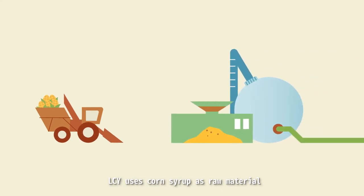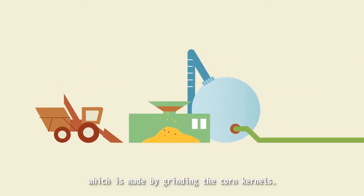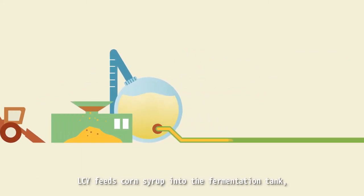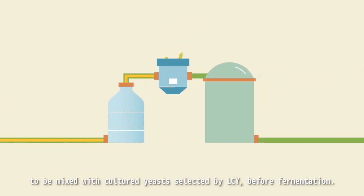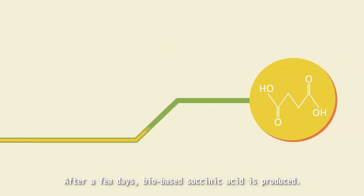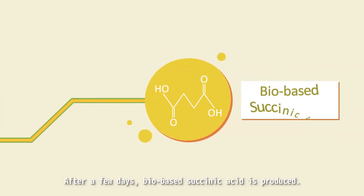LCY uses corn syrup as raw material, which is made by grinding the corn kernels. LCY feeds corn syrup into the fermentation tank to be mixed with cultured yeasts selected by LCY before fermentation. After a few days, bio-based succinic acid is produced.